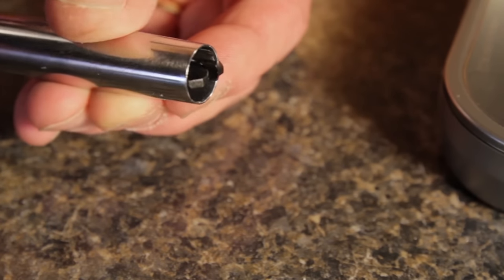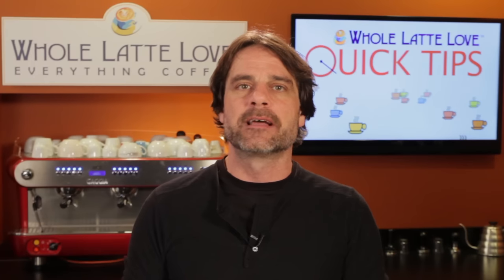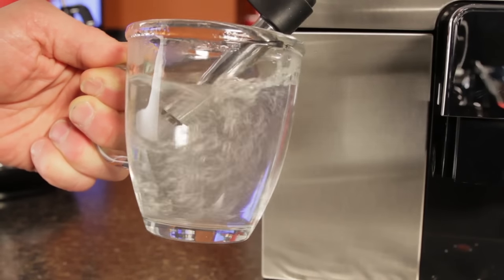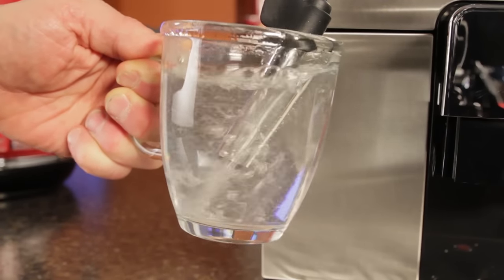With your wand operating properly, let's take a look at how tip positioning affects frothing. When you did the test, you kept the wand tip slightly below the surface of the milk. And that's the position which introduces the most air into the milk. But, watch what happens as we move the tip further into the milk.